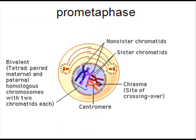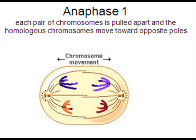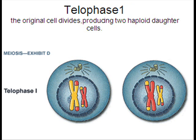In prophase I, homologous chromosomes group together into tetrads, which allow for genetic variation to occur. Crossing over occurs at the chiasmata. Sister chromatids don't separate in anaphase I. Telophase I produces two daughter cells, but then the cycle repeats — except there is no synthesis of new DNA.